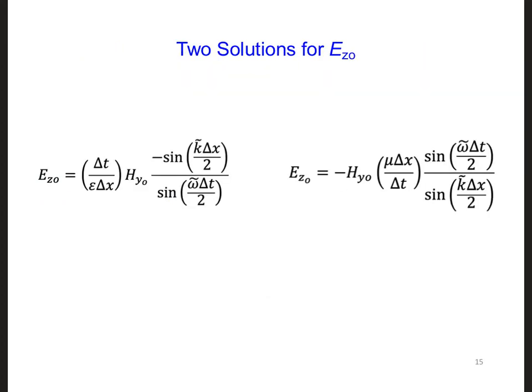So now, as for the analytical calculation that we did, we have two equations for Ez naught here. We solved for Ez naught instead of Hy naught. One from Ampere's law and one from Faraday's law.